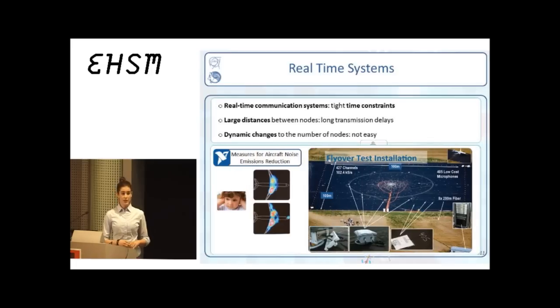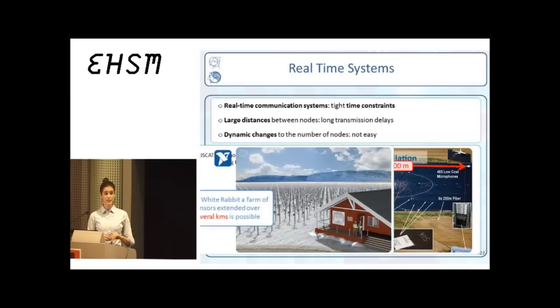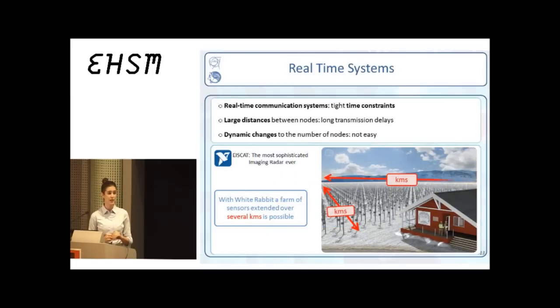Another example application comes from National Instruments, and they are a project on measuring aircraft noise emissions. You can see on the right-hand side their installation with more than 600 ground-based microphones. With the currently existing network, the installation is limited to an area of 100 meters by 100 meters. With White Rabbit, on the other hand, we can manage to create farms with thousands of sensors installed over several kilometers.